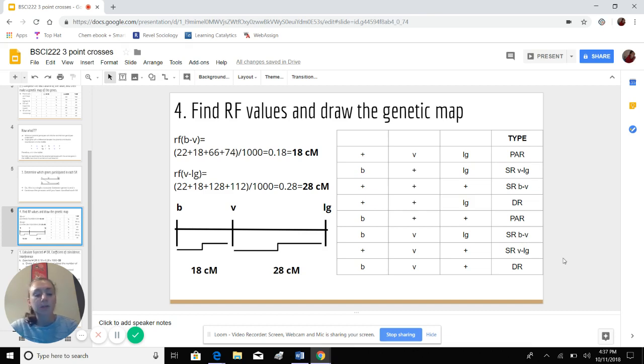And we divide by 1,000 because that's the total number of individuals in this sample. And we get 0.18. And we have to convert to centimorgans because that is the quantification method used in these genetic maps. So that would be 18 centimorgans.